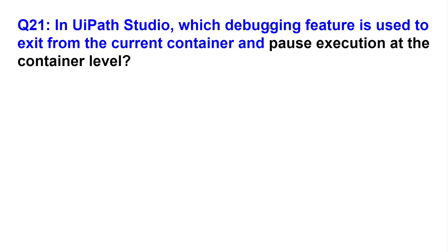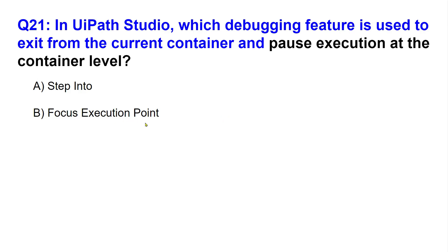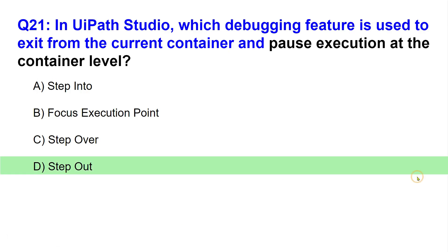In UiPath Studio, which debugging feature is used to exit from the current container and pause execution at the container level? Options: Step Into, Focus Execution Point, Step Over, Step Out. It will pause execution at the container level - it exits and pauses. The right answer is Step Out. You are already inside; you are stepping out of the container, so it is called Step Out.